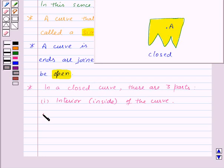Second part is boundary of the curve or on the curve. Here this is the boundary of the curve. So the point V is on the boundary of this curve.